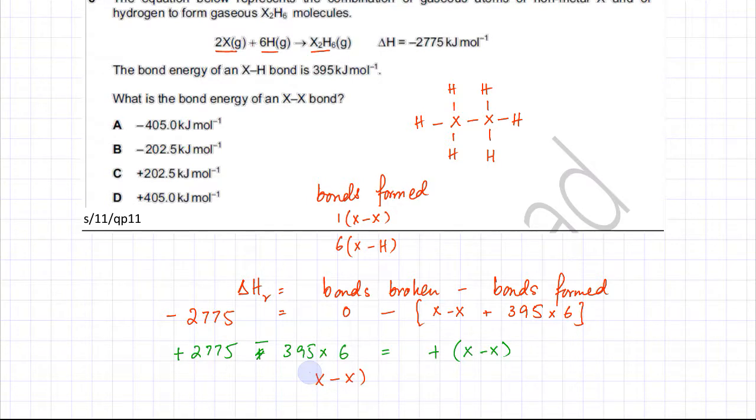...making it the subject of the equation, I get plus 405 kilojoules per mole. So the bond energy of the X-X bond is going to be option D.